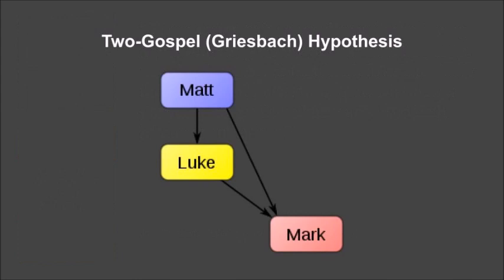Lastly, we come to the two-gospel hypothesis, also known as the Griesbach hypothesis. This hypothesis agrees with the Augustinian hypothesis in affirming that Matthew was the first Gospel to be written. It differs, however, in that it views Luke as being the second Gospel and Mark as being the third, rather than the other way around. In this way, Mark — being the shortest Gospel — becomes an abbreviated combination of both Matthew and Luke, with some degree of unique material added in. Because it posits that Mark is a combination of two other Gospels, it takes the name the two-gospel hypothesis.